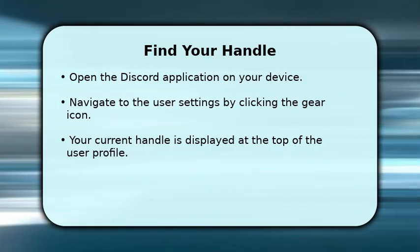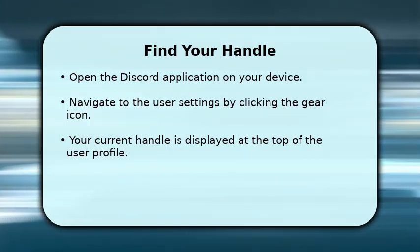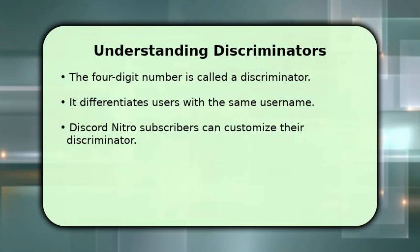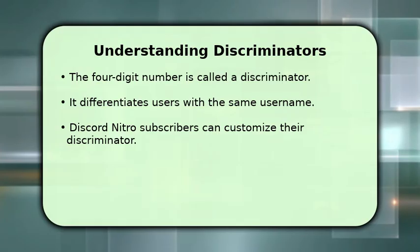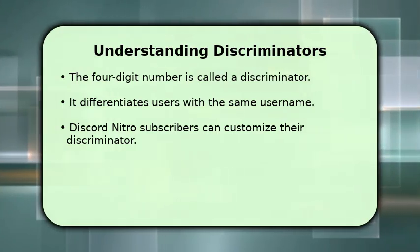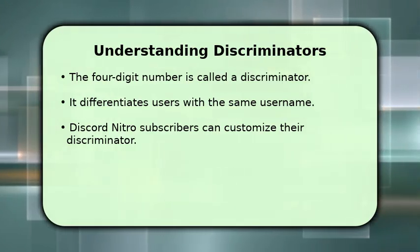Right at the top of this page, you'll see your current Discord handle clearly displayed. It will show your username followed by a hash symbol and four numbers. The four-digit number after your username, like userhash1234, is called a discriminator.